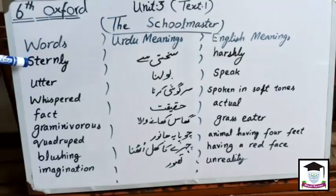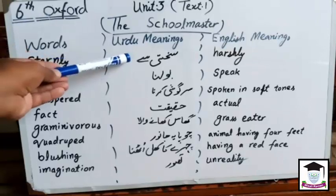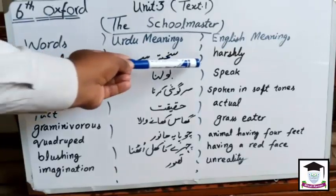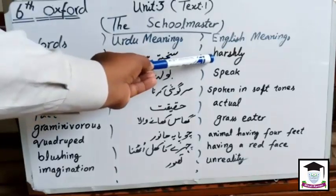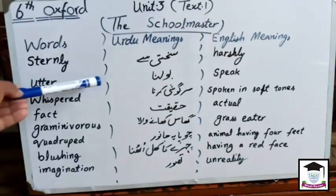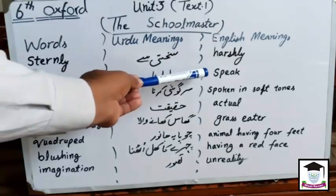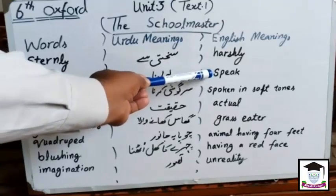First word is sternly. Urdu meaning: sakti se. English meaning: harsh. Next word is utter. Urdu meaning: bolna. English meaning: speak.